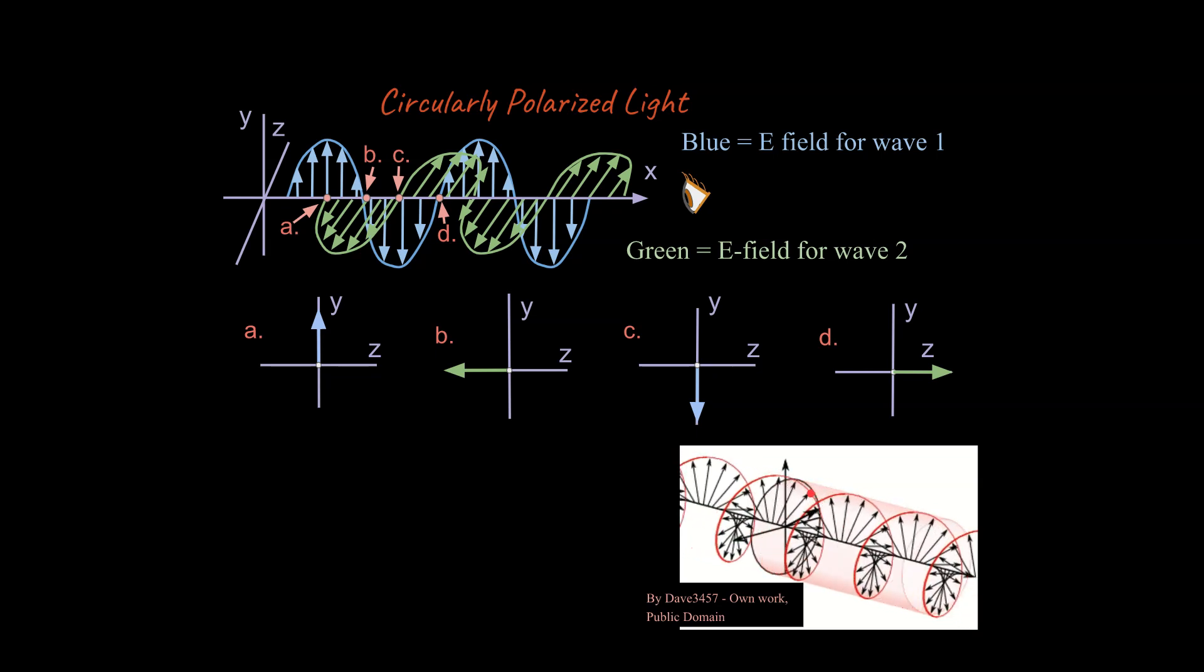So this is another more complex type of polarization called circularly polarized light. And it can move like in this direction. It could also move in the opposite direction as well. And that's essentially what you need to know about polarization.